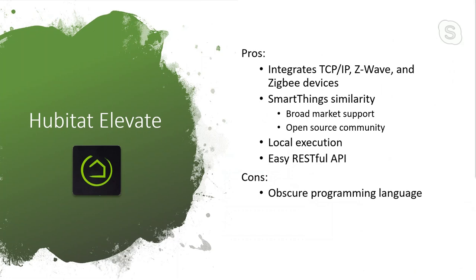The downside to Hubitat — just like SmartThings — it uses an obscure programming language called Groovy. To me it looks like Java and Python had an ugly baby. Along with that obscure language, there's a real lack of tooling. Hubitat has a kind of integrated IDE in a browser but without any real features, including no debugging. If you need to write custom code, you just have to rely on logs.